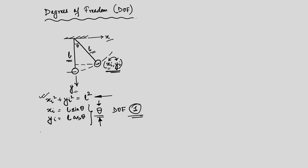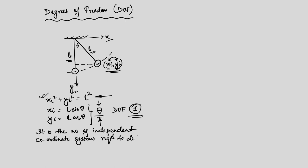The definition of degrees of freedom is: the number of independent coordinate systems required to define the deformed shape of a body. As we progress, we will see how to identify the degrees of freedom for a system and then develop the equation of motion.